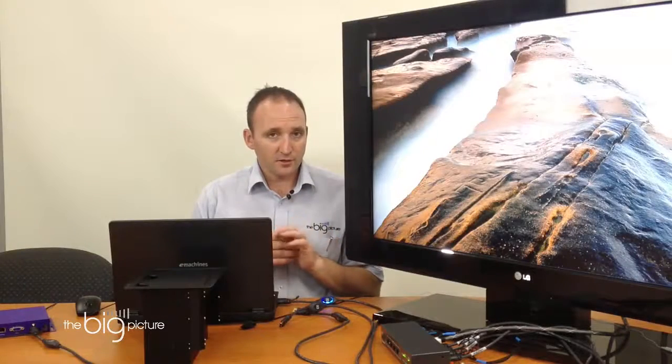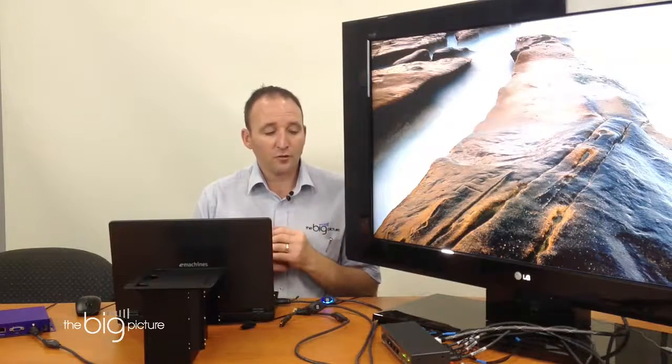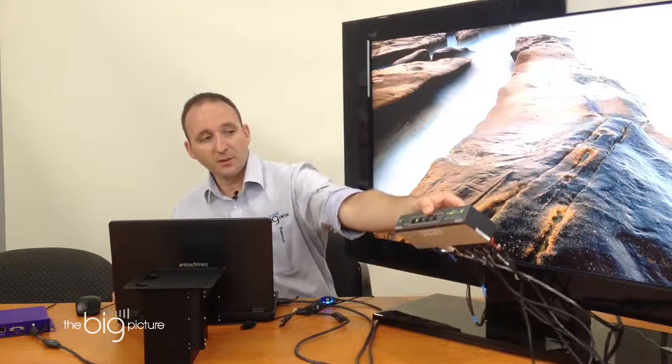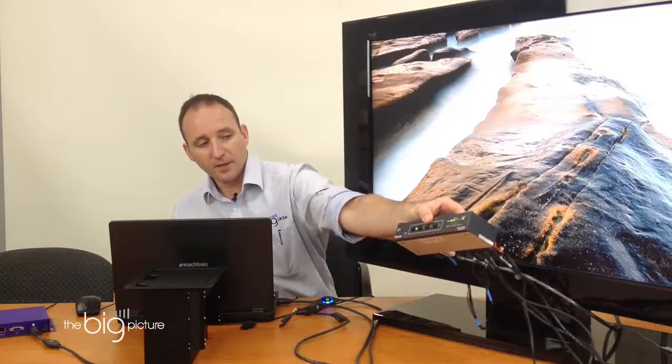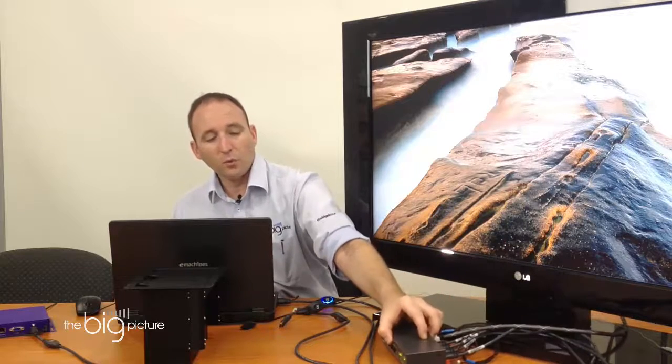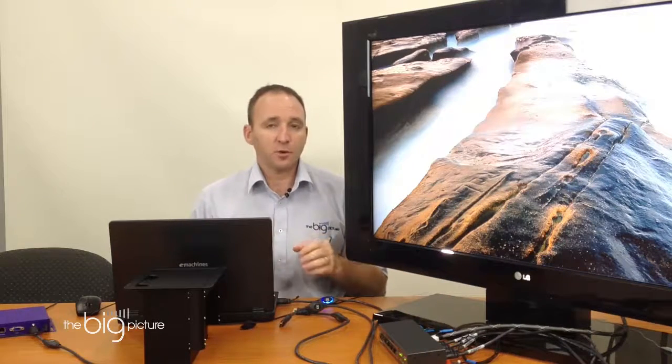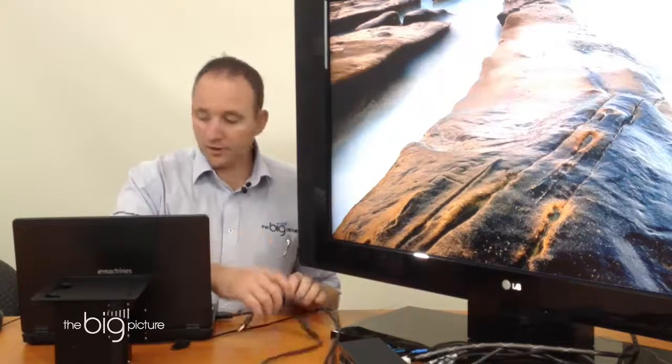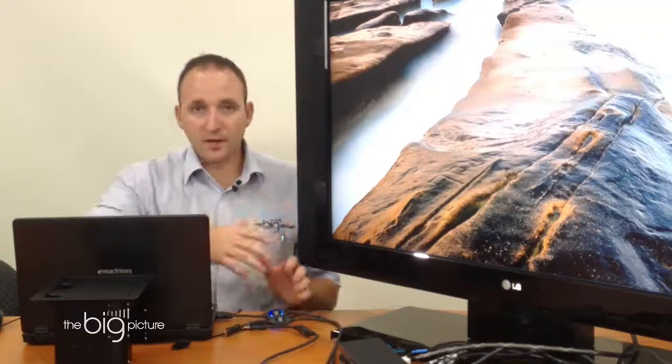This product in particular is called the Teamwork 400. Essentially what it is, the basic brains of it is right here and it's a four in, one out HDMI switcher. So we've just got four leads going into it, one going out to the TV and it switches.